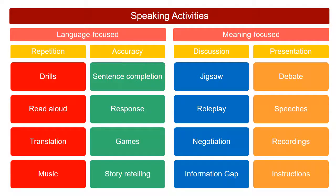For discussion-based activities, jigsaw activities work well — learners learn something in one group, then go to another group and teach what they learned. Lots of role play or simulation activities are a great way to practice automaticity with speech acts or problem solving. Negotiation of meaning is considered one of the most useful ways to practice meaningful speaking — give learners a situation where they have to resolve issues, perhaps persuading each other toward a solution.